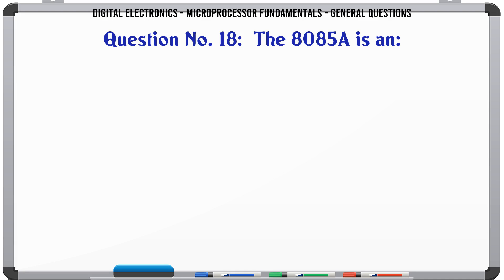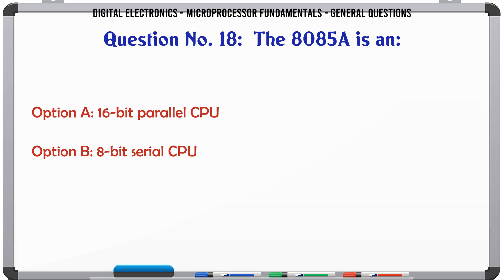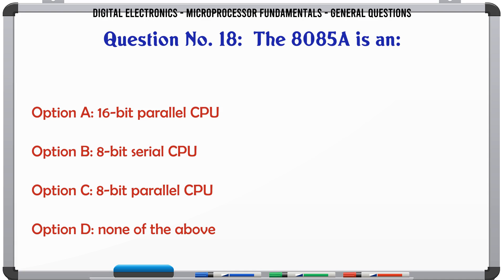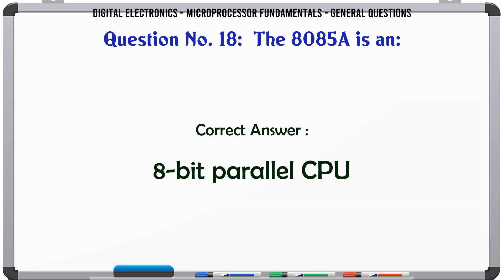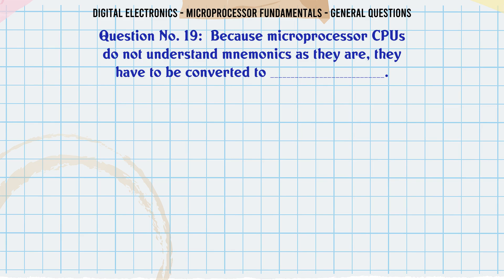The 8085A is an: A. 16-bit parallel CPU, B. 8-bit serial CPU, C. 8-bit parallel CPU, D. None of the above. The correct answer is 8-bit parallel CPU.